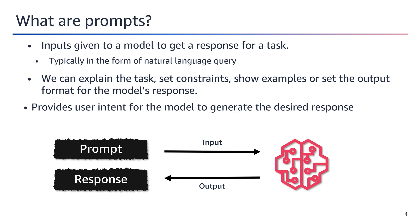Prompts are the key inputs that guide language models to generate desired responses for specific tasks. They typically take the form of natural language queries or instructions, allowing users to clearly communicate their intent and requirements to the model. Through prompts, users can provide detailed explanations of the task at hand, set constraints or boundaries for the model's response, offer examples to illustrate the desired output, and even specify the preferred format for the generated content.